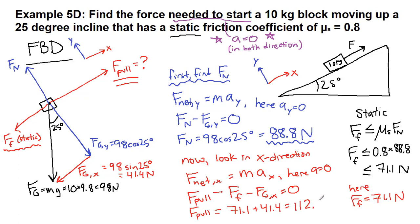We can round that to 112 or 113, no problem. But that is the pull force that we need to have to start it moving. If we pull with 115, for example, it will start to accelerate at a small amount, but it will move up the ramp.